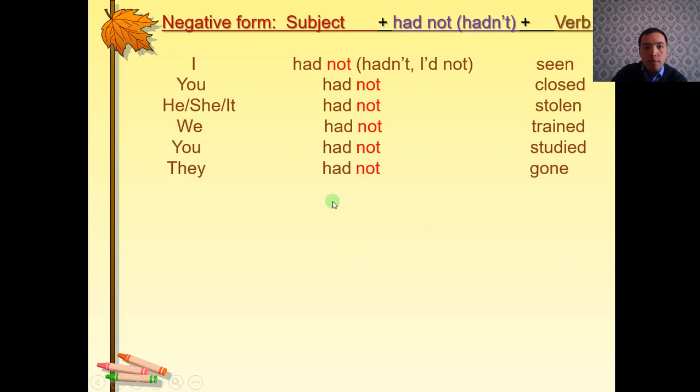So, the negative form. The structure is subject plus had not or hadn't plus verb 3. I had not seen. You had not closed. He, she, it had not stolen. We had not trained. You had not studied. They had not gone.